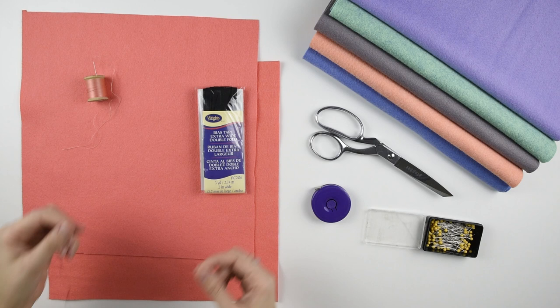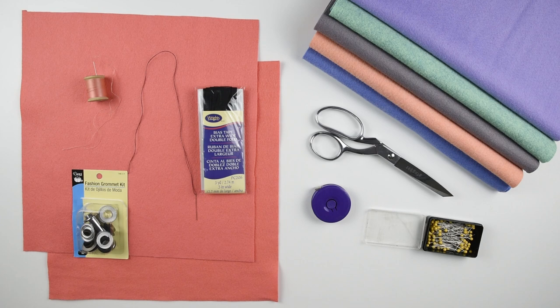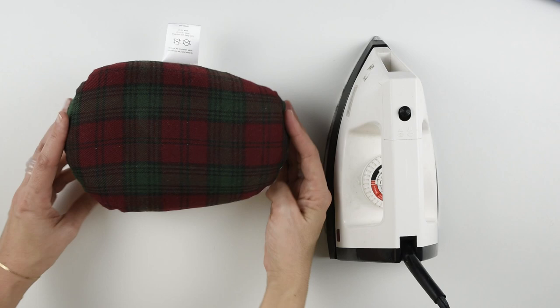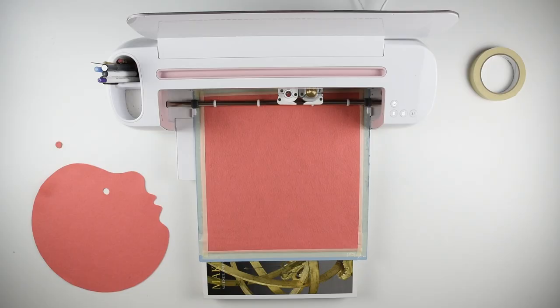You'll also need some thread to match the bias tape, a half inch grommet from this kit that also includes the setting tools, and a hammer. It would be helpful to have an iron and this thing called a tailor's ham, which is used for ironing curved seams.